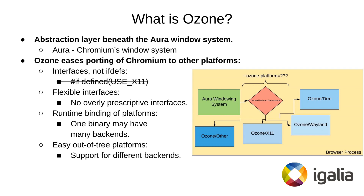Third, a single binary can have several backends at the same time, and they can be chosen at runtime. For example, in the Ozone support for Linux at the moment, it's possible to switch between Wayland, X11, and headless backends. On Chrome OS builds there are even more options — in addition to those three, Chrome OS also has the DRM backend. Finally, Ozone eases downstream development. Not all of the backends end up in upstream, and the goal is to make life of downstream maintainers as easy as possible.